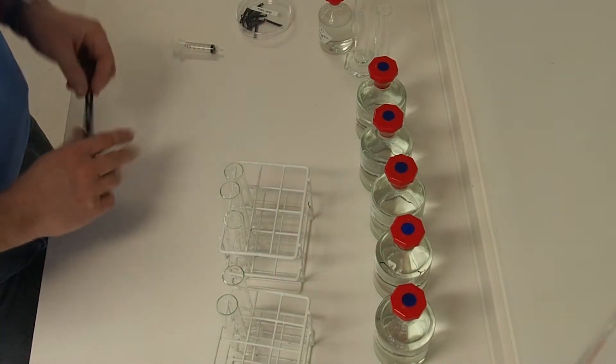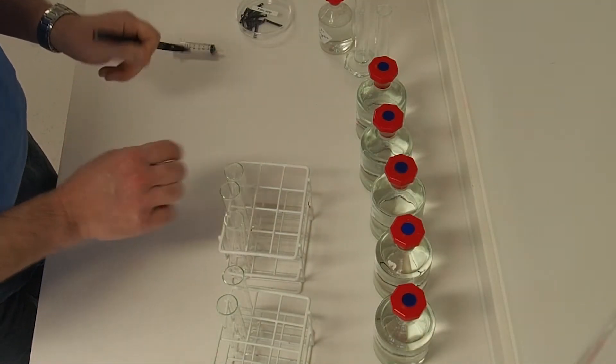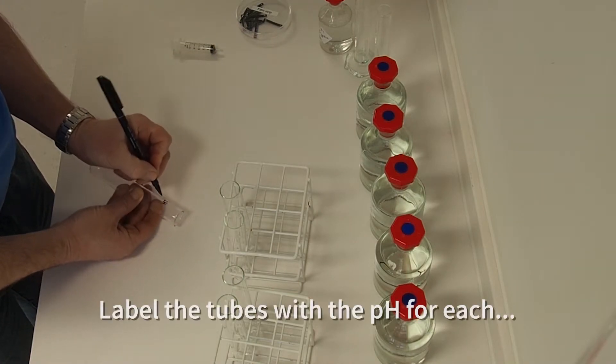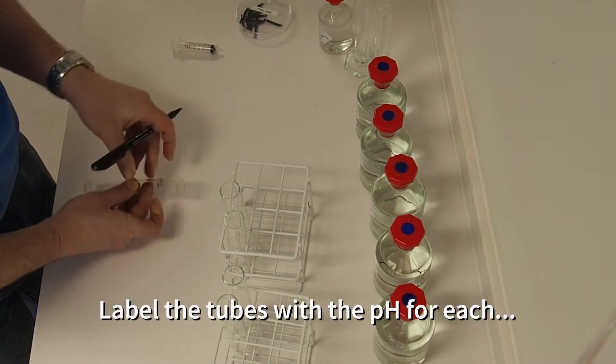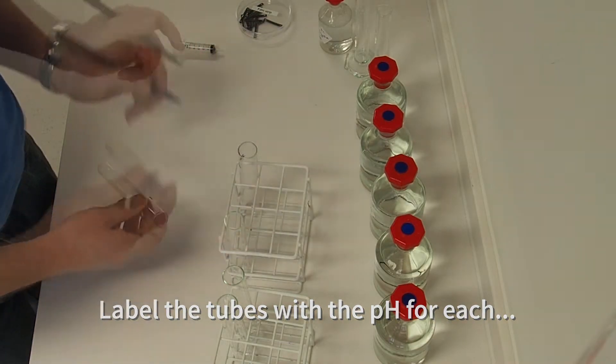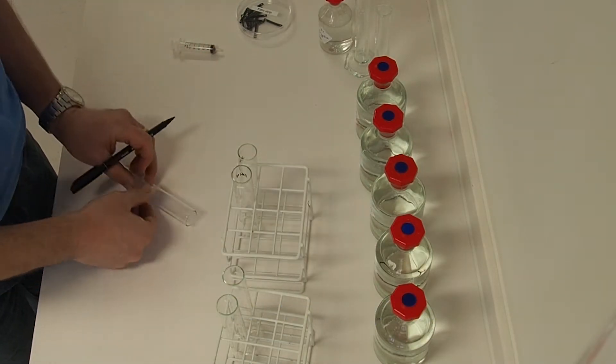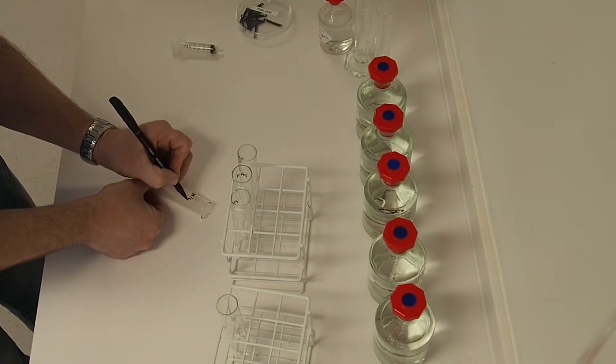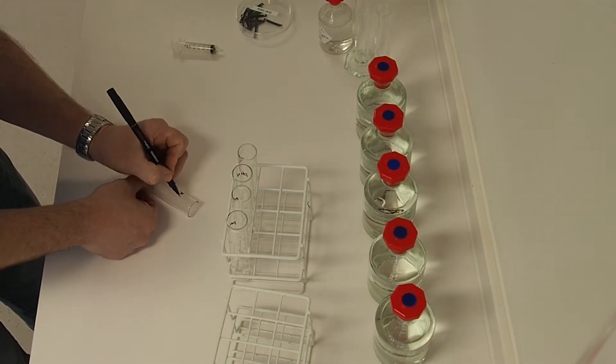So first of all I'm going to take some boiling tubes and a permanent marker and label them with the pH of five different pH buffer solutions. A pH buffer solution is just a solution which will hold the pH at whatever value I desire, and in this case I'm using pH 1, 4, 7, 10, and 14 to give me a wide range.